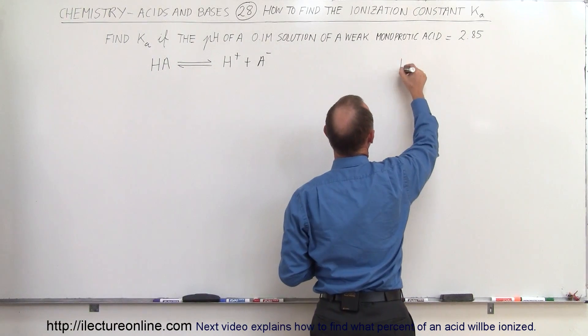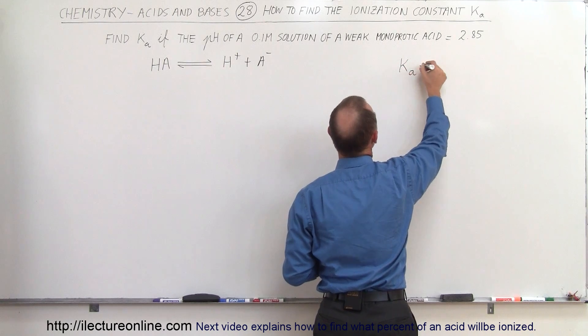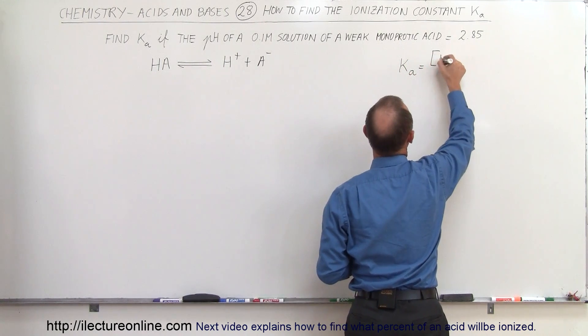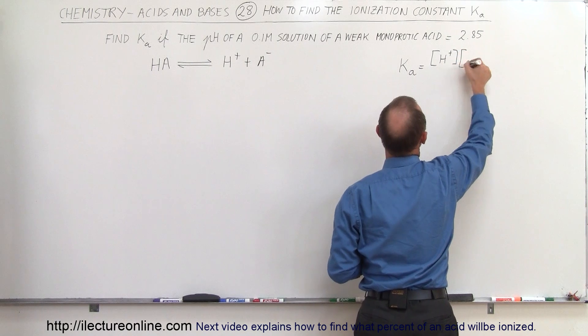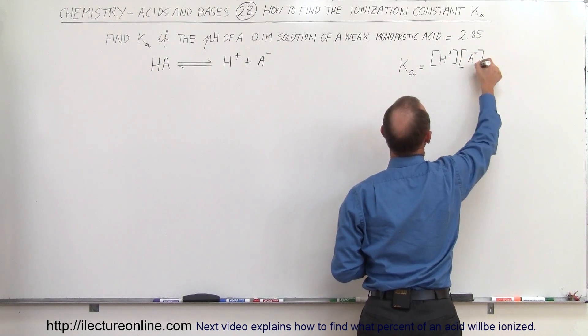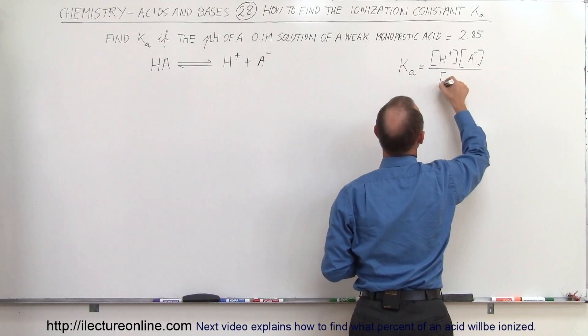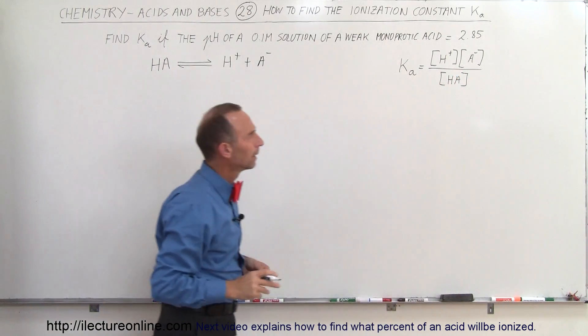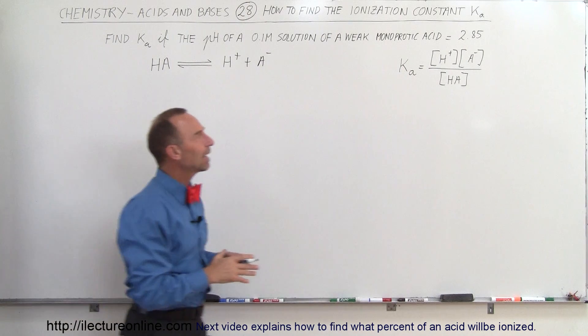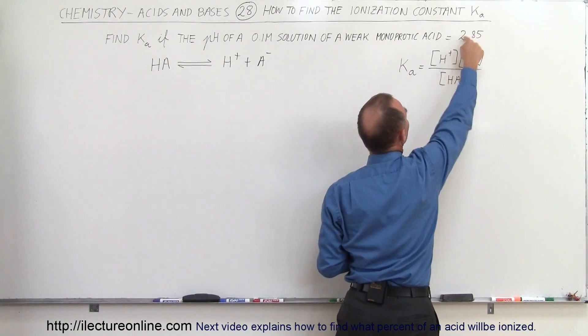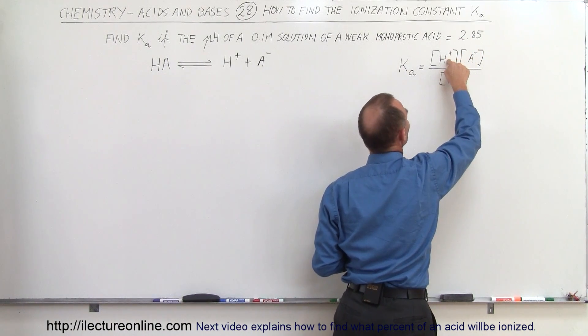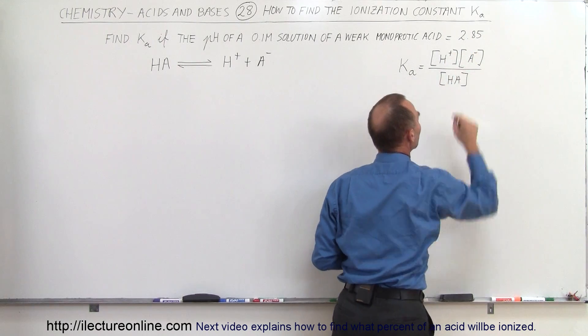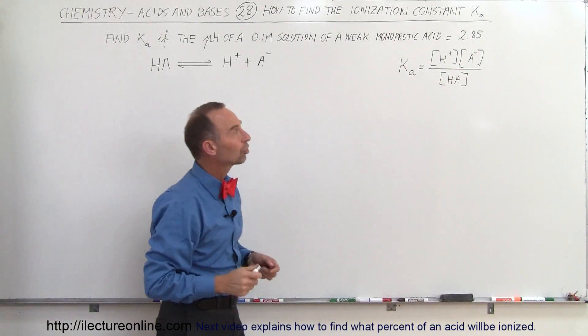We know by definition that the ionization constant, Ka, is equal to the concentration of the hydrogen ion in solution times the concentration of the associated conjugate base divided by the concentration of the acid remaining in the solution. Since they gave us the pH, we should be able to find the concentration of the hydrogen ion, which should also be the concentration of the conjugate base.